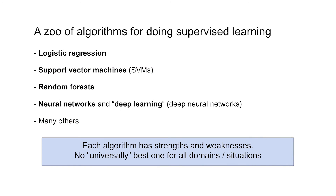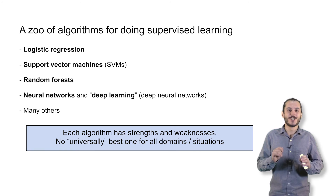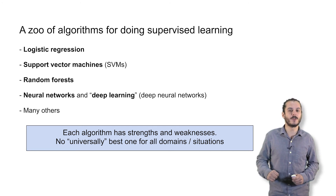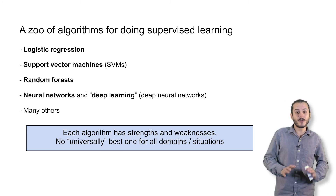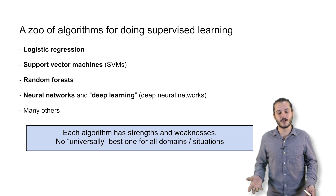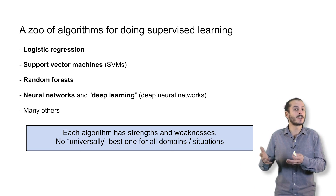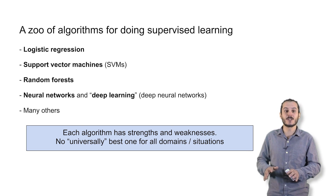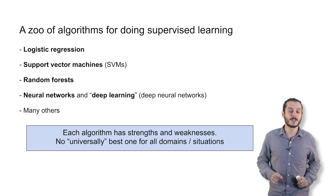One last thing to take away from this tutorial: there are many algorithms for doing supervised learning, and on the screen you can see just a small subset. In recent times, you may have heard a lot about neural networks and deep learning. You should remember that neural networks are just one example of a machine learning algorithm among many others — they have their strengths and weaknesses — but we'll talk later about some reasons why they've been so prevalent recently.